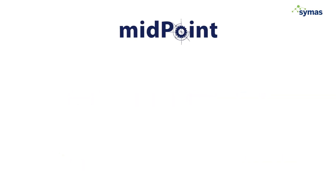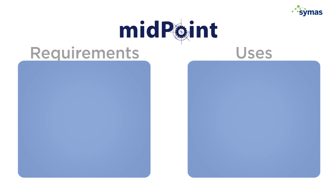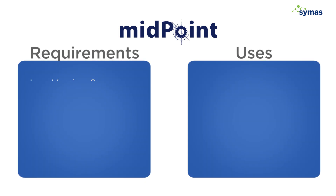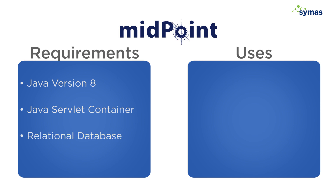The first thing you need to know about Midpoint is it is Java. To run the latest version of Midpoint 3.5, you need Java version 8. It also requires a Java servlet container. Midpoint is a web application archive that deploys inside of a servlet container. To run it in production, you would also want to have a relational database. It can be flexible in terms of which relational database to use, but you will need one.